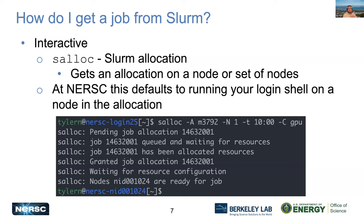You can get an interactive job by using the salloc command — short for Slurm allocation. You're asking Slurm to allocate you a node or set of nodes to do your work on. Here at NERSC, when you run the salloc command, it defaults to logging you into that compute node as a login shell. You can see here I was on login 25, ran this command, and it automatically logged me into a compute node. All our compute nodes start with NID in their name.